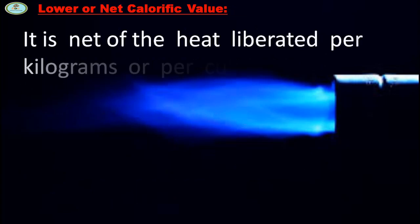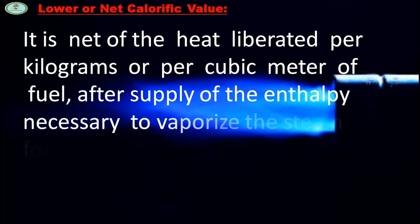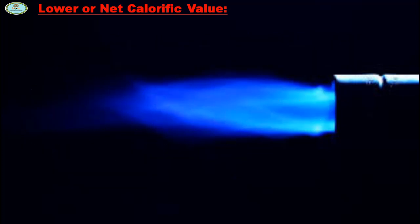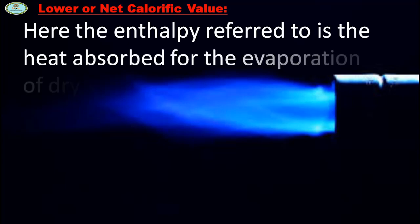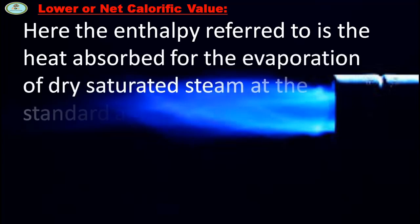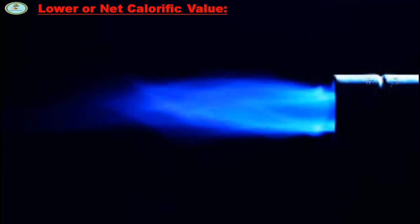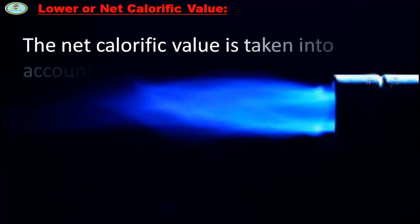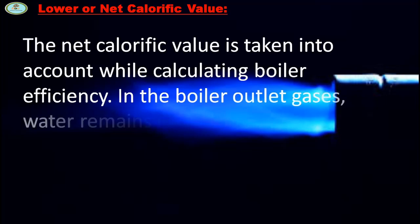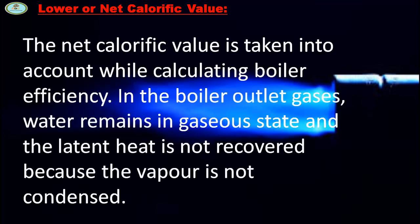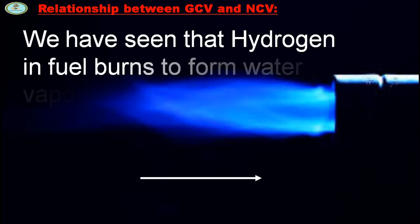Low or Net Calorific Value (NCV): it is the net heat liberated per kg or per cubic meter of fuel after supplying the enthalpy necessary to vaporize the steam formed by combustion of hydrogen in the fuel. The enthalpy referred to is the heat absorbed for the evaporation of dry saturated steam at standard atmospheric pressure of 760 mm of Hg. It is the gross calorific value minus the heat loss due to hydrogen. The net calorific value is taken into account while calculating boiler efficiency, as in the boiler outlet gases, water remains in gaseous state and latent heat is not recovered.